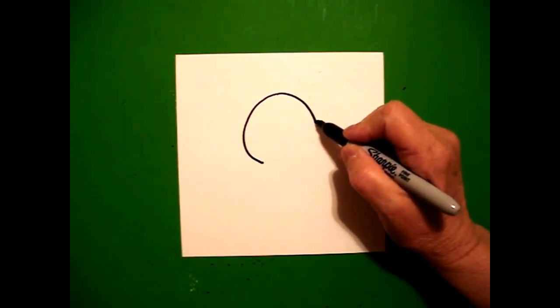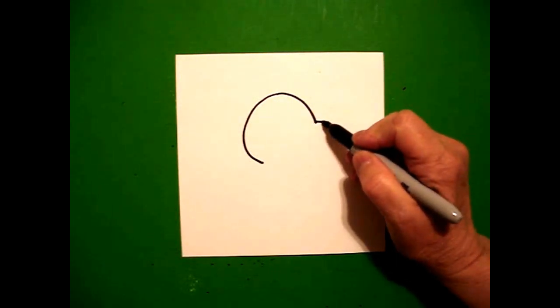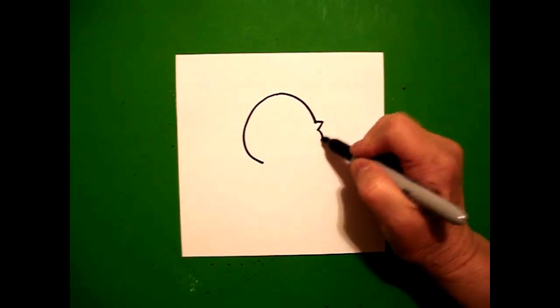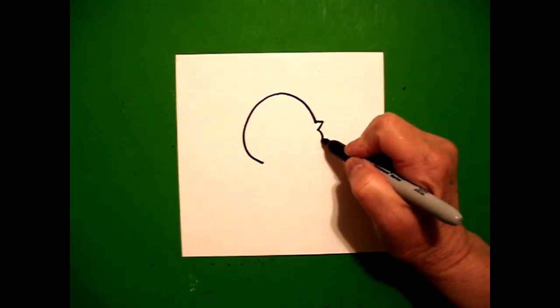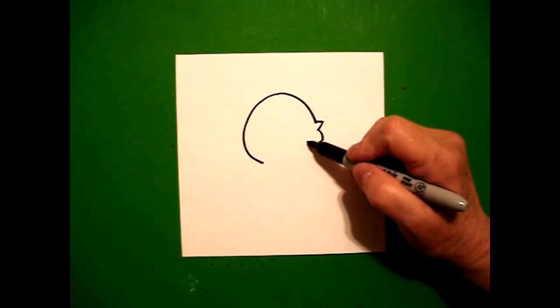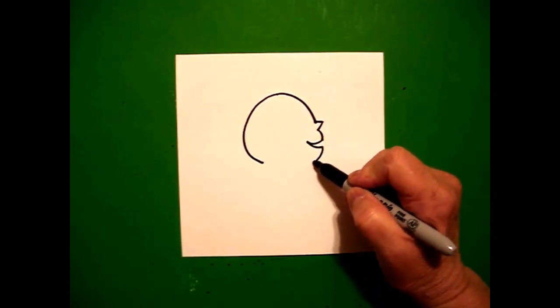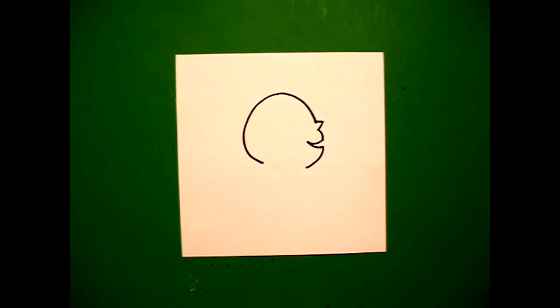Right here where I stop, we're going to draw a little straight line out. Little straight line down. Little curve line down. Little curve line in. Little curve line out. Little curve line down. And stop.